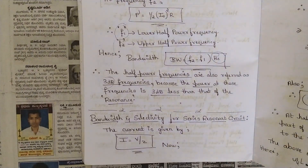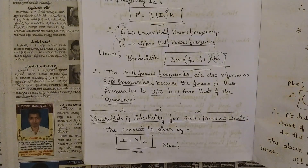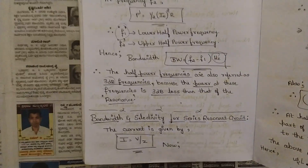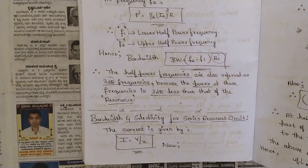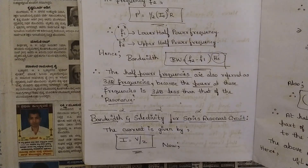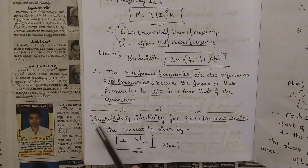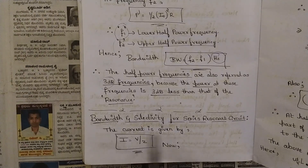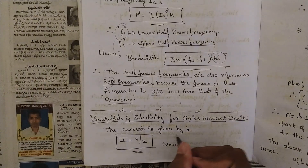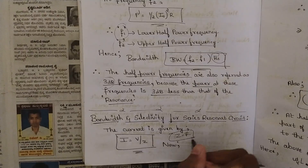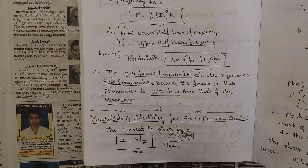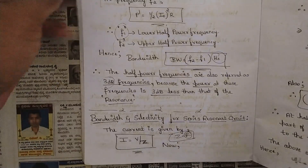We have covered the concept of bandwidth in the previous session — how it is related to cutoff frequencies. Now let us try to obtain the expressions using the condition of bandwidth, that is bandwidth and selectivity for a series resonant circuit. The current is given by i = v/z, where at resonance z = R, but now we replace it with z generally, so i = v/z.